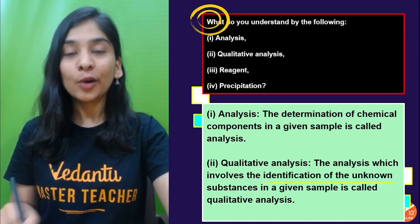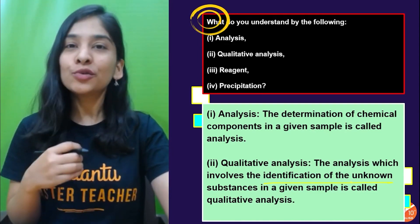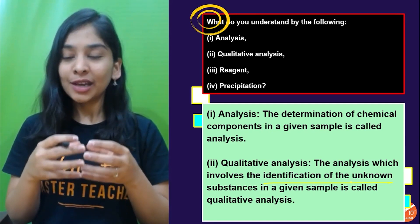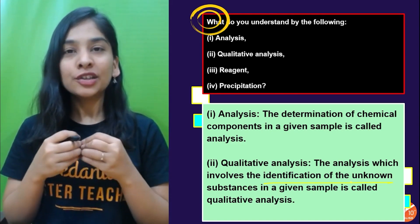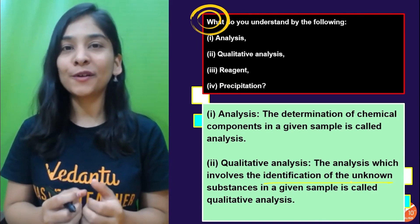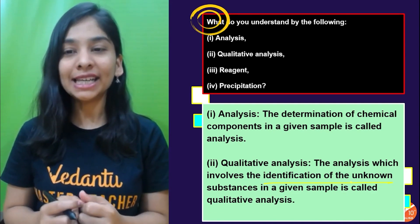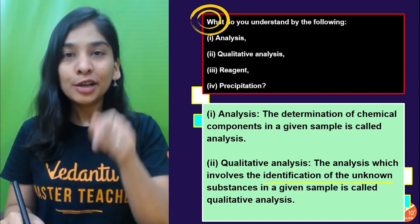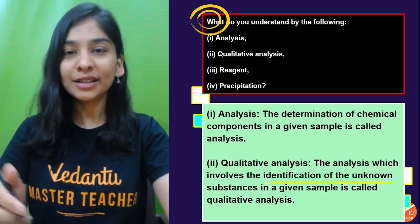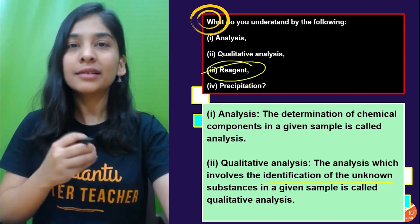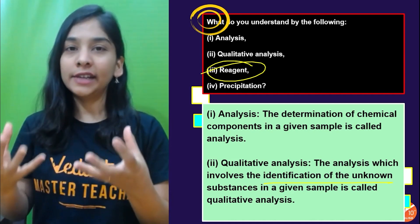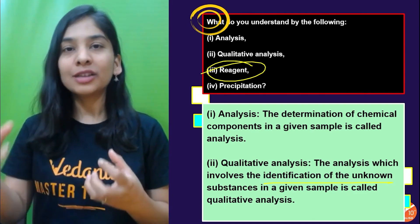Qualitative analysis is about identifying unknown substances. When we used to go to the organic chemistry laboratory, teachers would give a mixture of organic compounds and ask us to do qualitative analysis — meaning we needed to identify all the compounds present with the help of chemical tests. A reagent is a substance that participates in a chemical reaction and can be recovered as a product at the end.